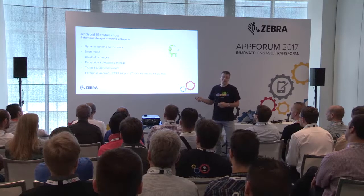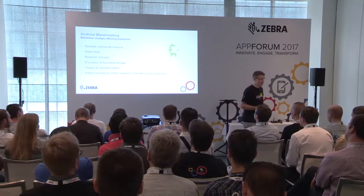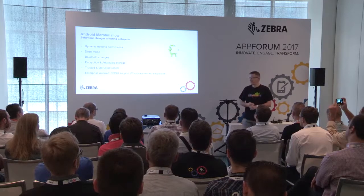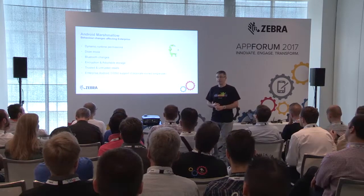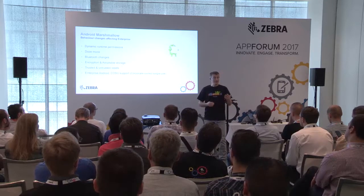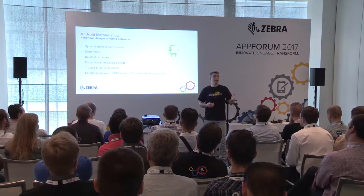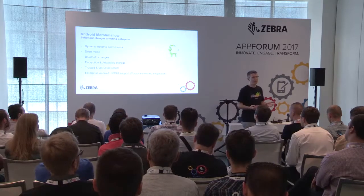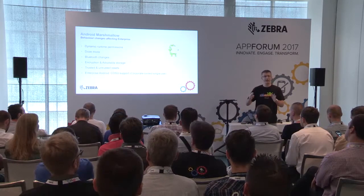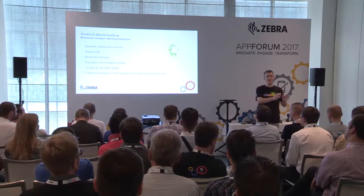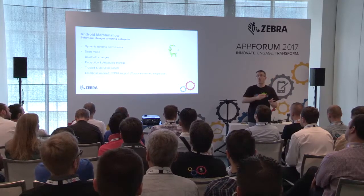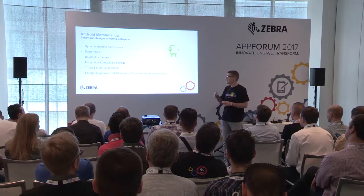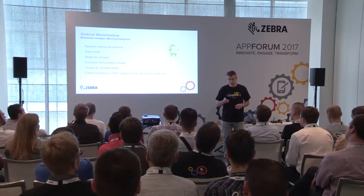Marshmallow is probably where we have most of the changes for the developer. The biggest change is dynamic runtime permissions. This aligns Android's behavior with iOS. In the past, when you installed an application on Android, the user accepted all permissions at install time. This was easy for developers — you knew you had all the permissions listed in the manifest. In Marshmallow, it no longer works that way. You may not have a permission at runtime, so you need to check for it dynamically using the checkSelfPermission call.